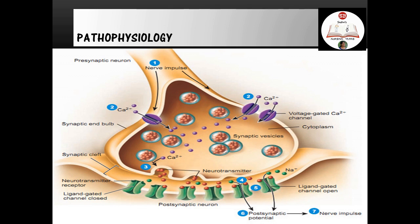This is a clearer view of the axon terminal. When the nerve impulse reaches the axon terminal, voltage-gated calcium channels open. Calcium entry triggers vesicles containing acetylcholine to fuse with the terminal end and release acetylcholine. This acetylcholine binds to the receptor site, opening ligand-gated sodium channels and creating a potential that causes muscle contraction. This is the normal process.